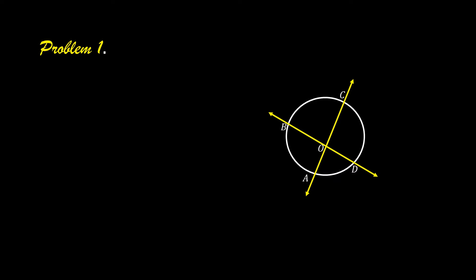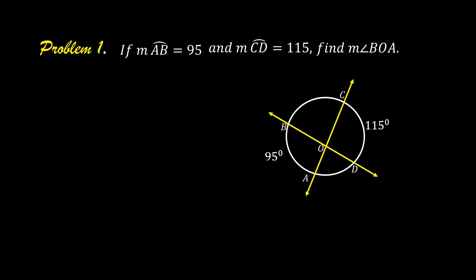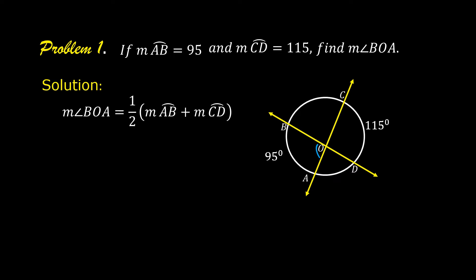Let us solve problem number one. If the measure of arc AB is equal to 95 and the measure of arc CD is equal to 115, find the measure of angle BOA. The measure of angle BOA is equal to one-half times the quantity: measure of arc AB plus measure of arc CD.